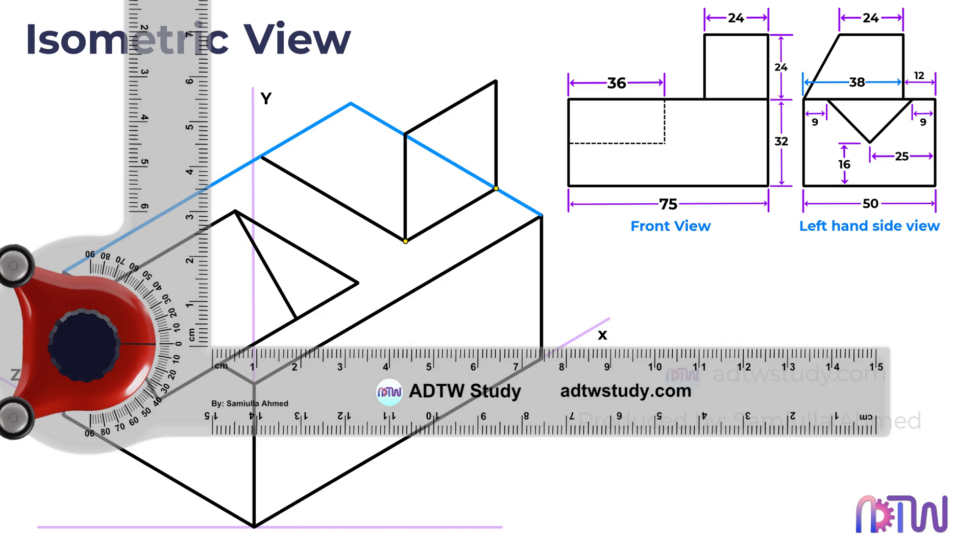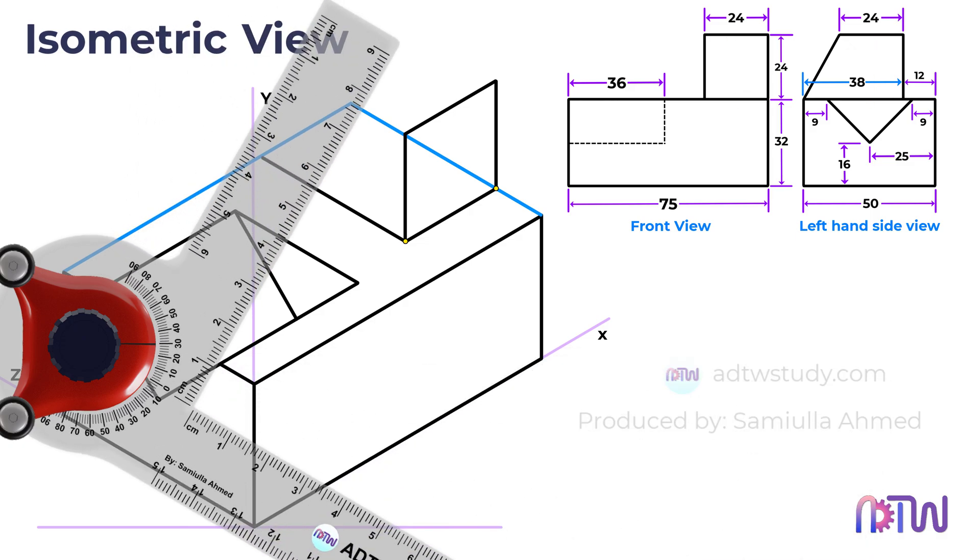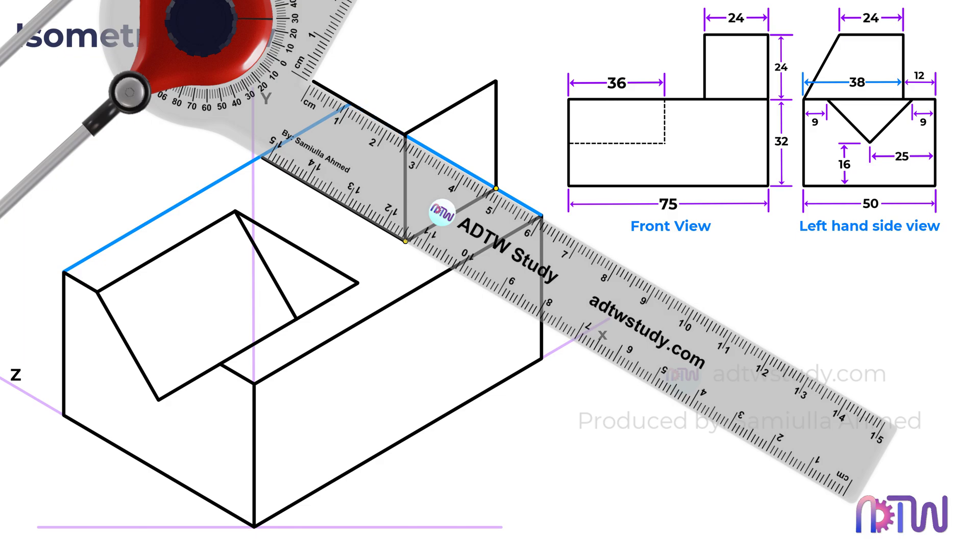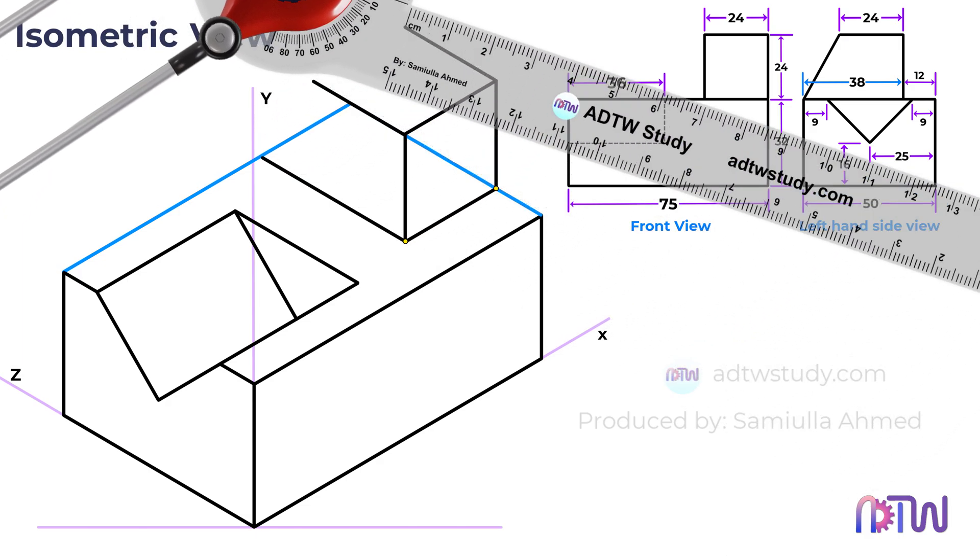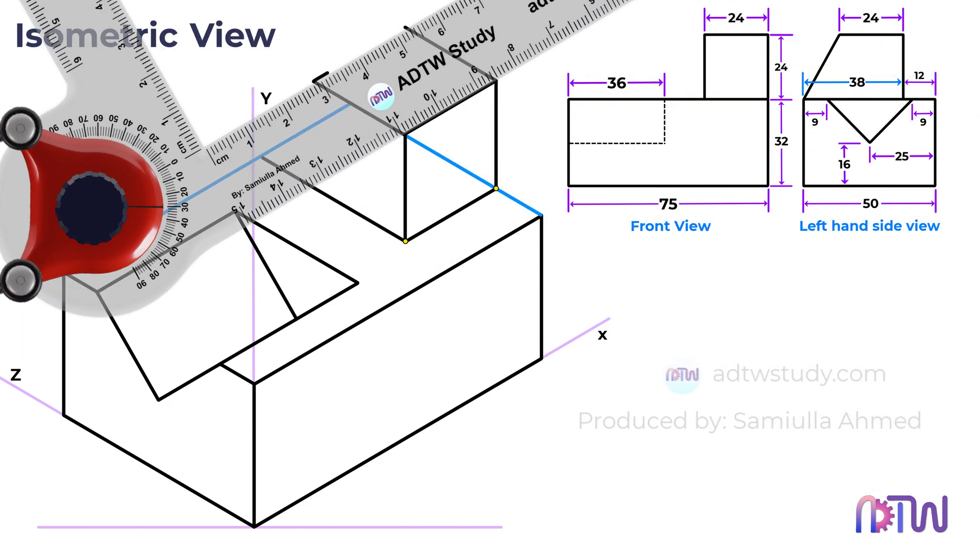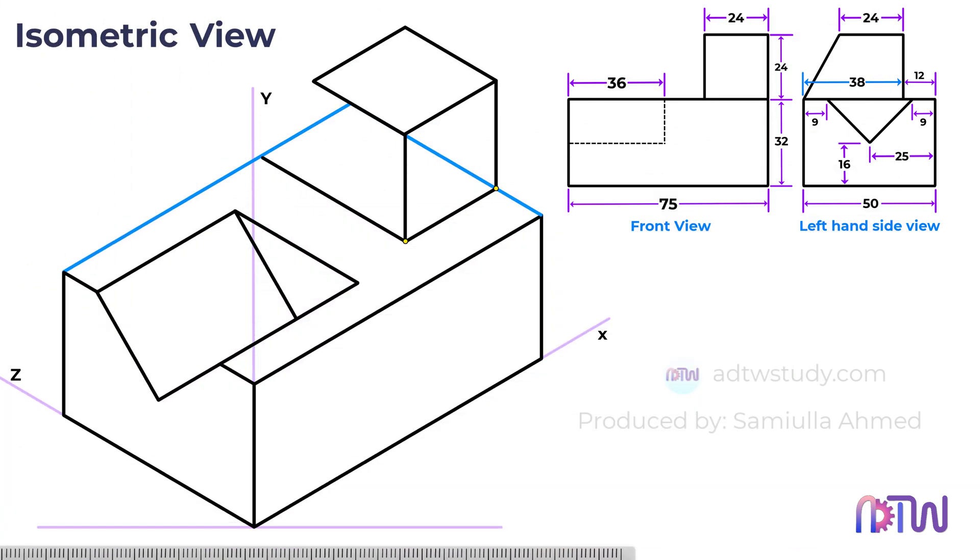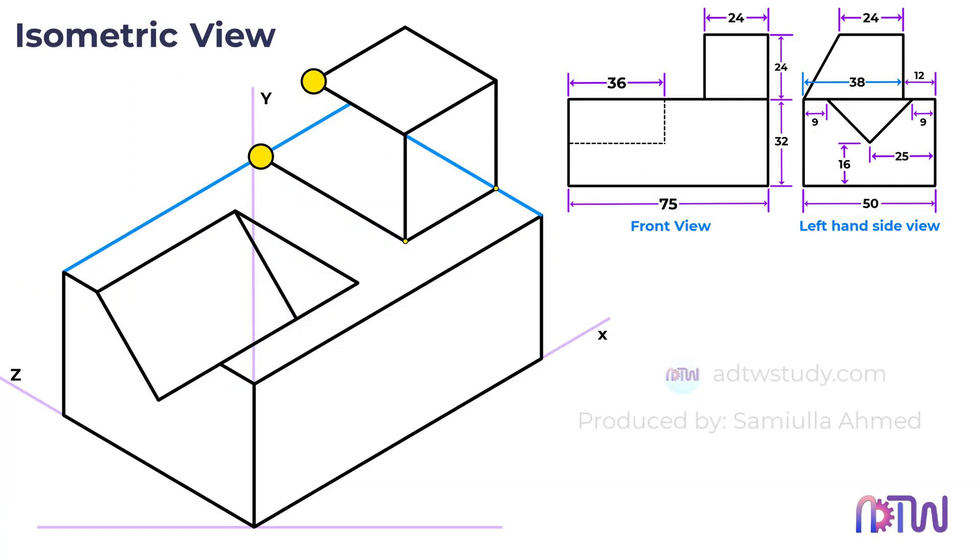Continuing, since the object's top section holds dimensions of 24mm in length and width, it's time to craft a square at this height. Elegantly construct a square spanning 24mm following the visual cues. Finally, connect these two points to achieve the completion of the isometric view.